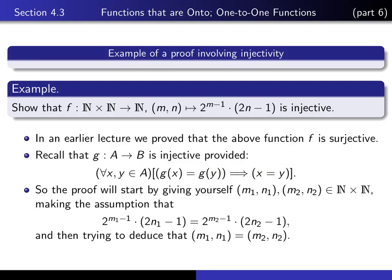That means we have to start the proof by giving ourselves two elements of the domain — two ordered pairs, (m1, n1) and (m2, n2), in our domain ℕ×ℕ. Then we have to assume that the values of the function at these two points are equal. And then we have to deduce from that that the points in the domain are really the same — that is, we have to show that m1 equals m2 and n1 equals n2.